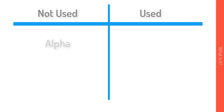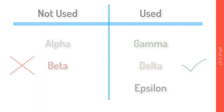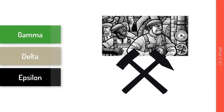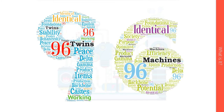The Bokanovsky's Process is not used to produce Alphas or Betas, but rather reserved for Gamma, Delta, and Epsilon castes. Each set of people produced using the process can also be designed with adaptations for their specific role in society. With this innovation, we can efficiently create the working caste who run our machines and form the backbone of the World State. Just imagine the potential of 96 identical twins working 96 identical machines.